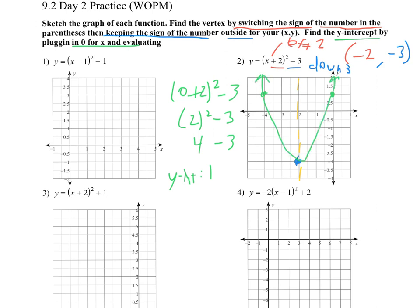I'll draw the matching point on the other side of the axis of symmetry, connect them, and make our parabola. Same thing for number 4. Once again, we switch the signs for the vertex — on the inside, that's going to become positive one, the opposite of what you'd think. Then this one stays as positive two because on the outside we do not change the sign. I can graph the vertex right there and draw my axis of symmetry.